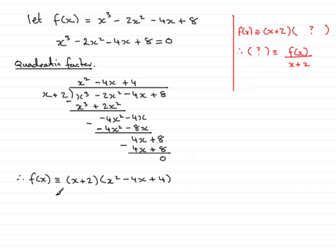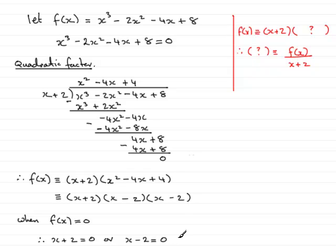Now we can factorize the quadratic factor. That'll be two brackets. So there'll be an x there and an x there. And it'll be minus 2 and minus 2. So when f of x, when f of x equals 0, that's the equation up here, we can see that either x plus 2 would equal 0, or the other factor would equal 0. Well, since we've got a repeated factor here, it just is sufficient to say x minus 2 would equal 0.